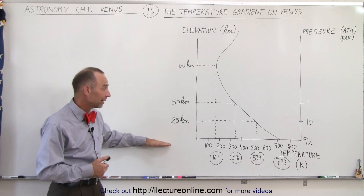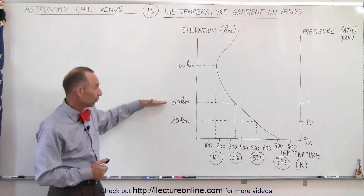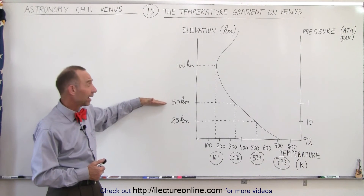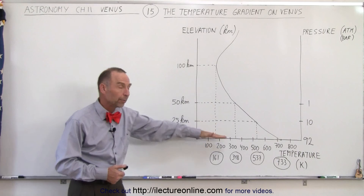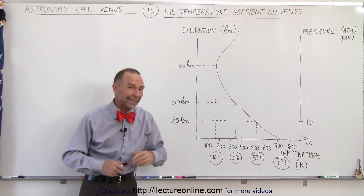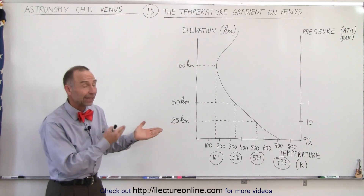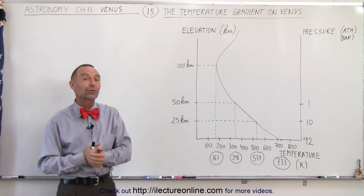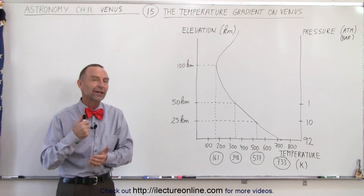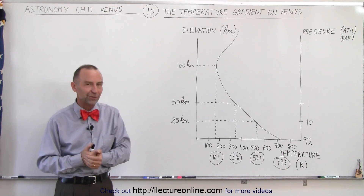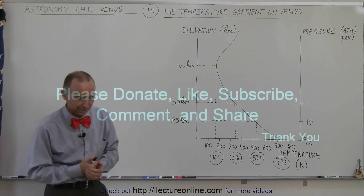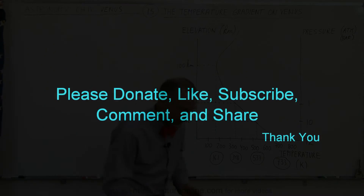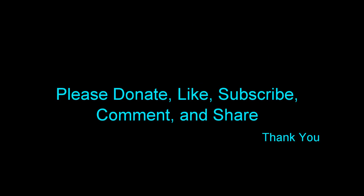There it is — you can see that. Until you start reaching heights of 50 kilometers and above, the temperatures are well above what you'll find anywhere on the Earth. And that's the temperature gradient you'll find in the atmosphere on Venus.